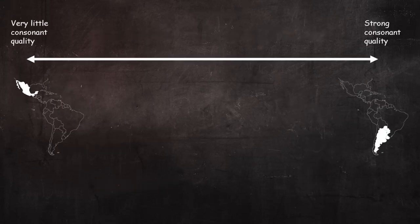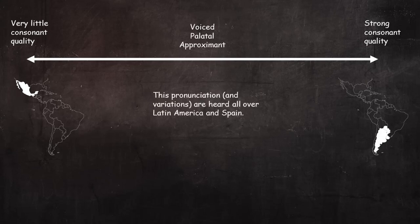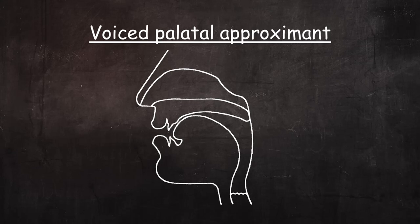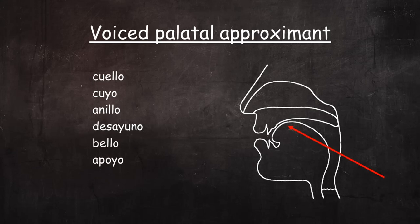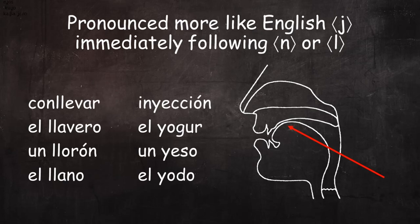Between these two extremes of nearly a vowel sound and strong consonant sound is the voiced palatal approximant. This pronunciation and minor variations of it are heard all over Latin America and Spain. The voiced palatal approximant is produced by bringing the middle of the dorsum of the tongue close to the middle of the palate without quite touching. As the air passes between the tongue and palate, a small amount of audible turbulence is produced. Listen to these examples: cuello, cuyo, anillo, desayuno, bello, apoyo, amarillo, ayuda. Just as is the case with the more vowel-like double L and Y, the voiced palatal approximant is pronounced more like English J when preceded by N or L.